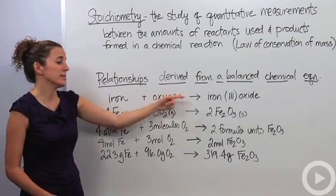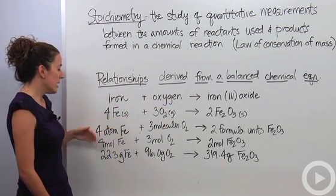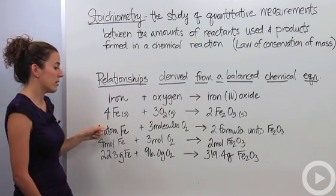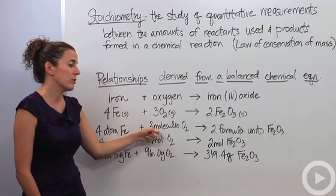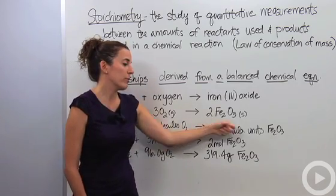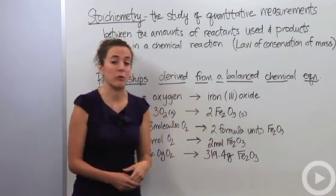What those coefficients — four, three, and two — actually mean is that for every four atoms of iron that react with three molecules of O2, you get two formula units of Fe2O3.